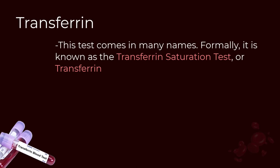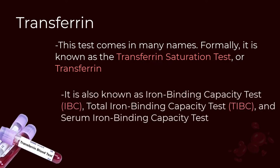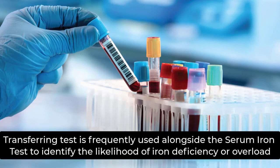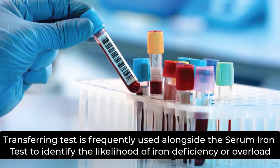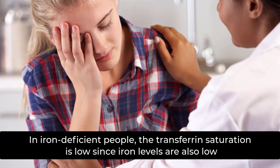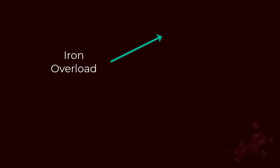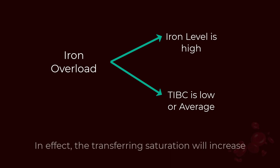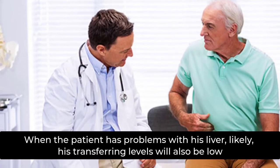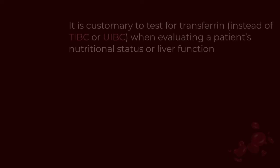The transferrin test is known by many names, including transferrin saturation test, iron binding capacity test (IBC), total iron binding capacity test (TIBC), and serum iron binding capacity test. It is frequently used alongside the serum iron test to identify the likelihood of iron deficiency or overload. In iron-deficient people, the transferrin saturation is low since iron levels are also low. In iron overload, the iron level is high but the TIBC is low or average, and transferrin saturation will increase. An unsaturated iron binding capacity test (UIBC) may be conducted instead of TIBC.